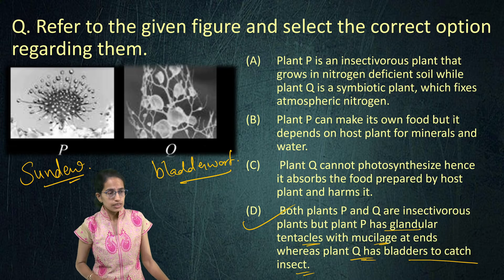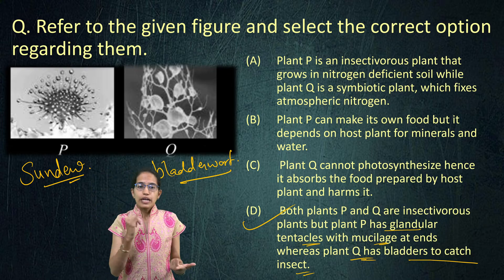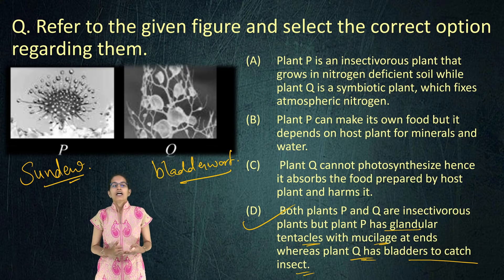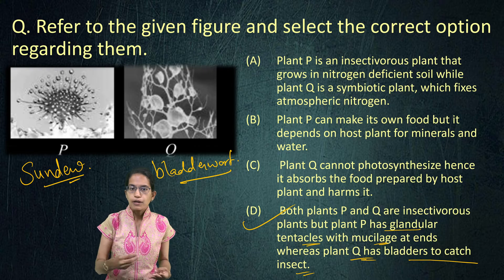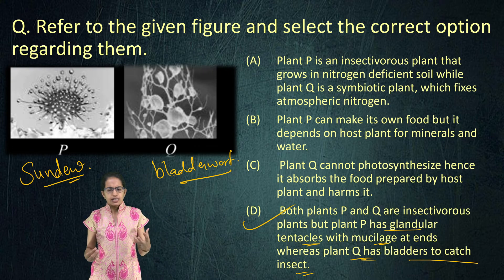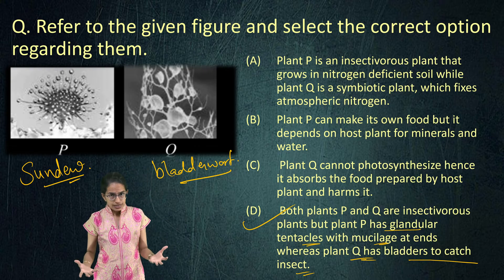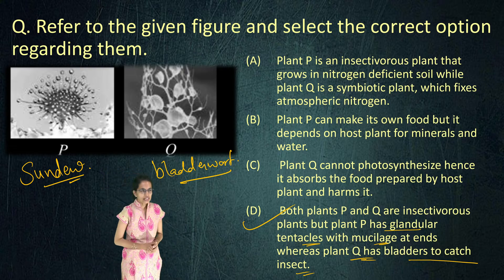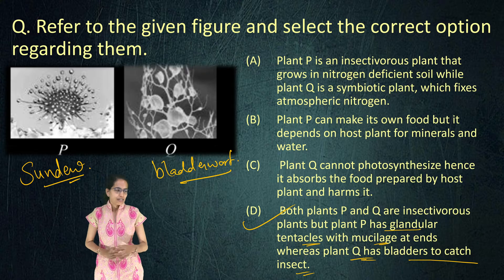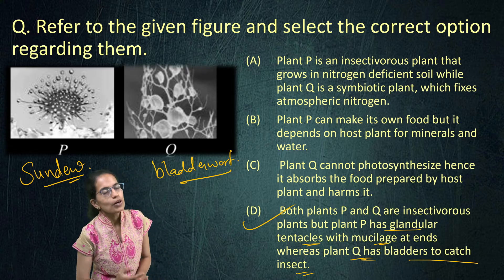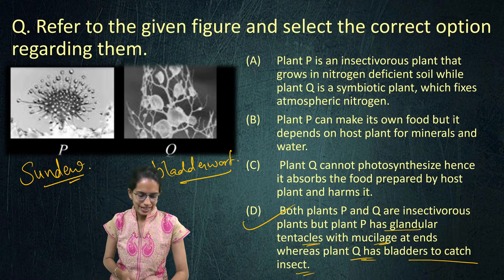All the questions we discussed pertain to conduction in plants, types of plants, insectivorous plants, and calculating the amount of moisture — technically a mental ability question but related to biology. I hope this was clear. Do follow the link below for more practice questions for your Level 2 exam. Prepare well and have a wonderful day ahead.